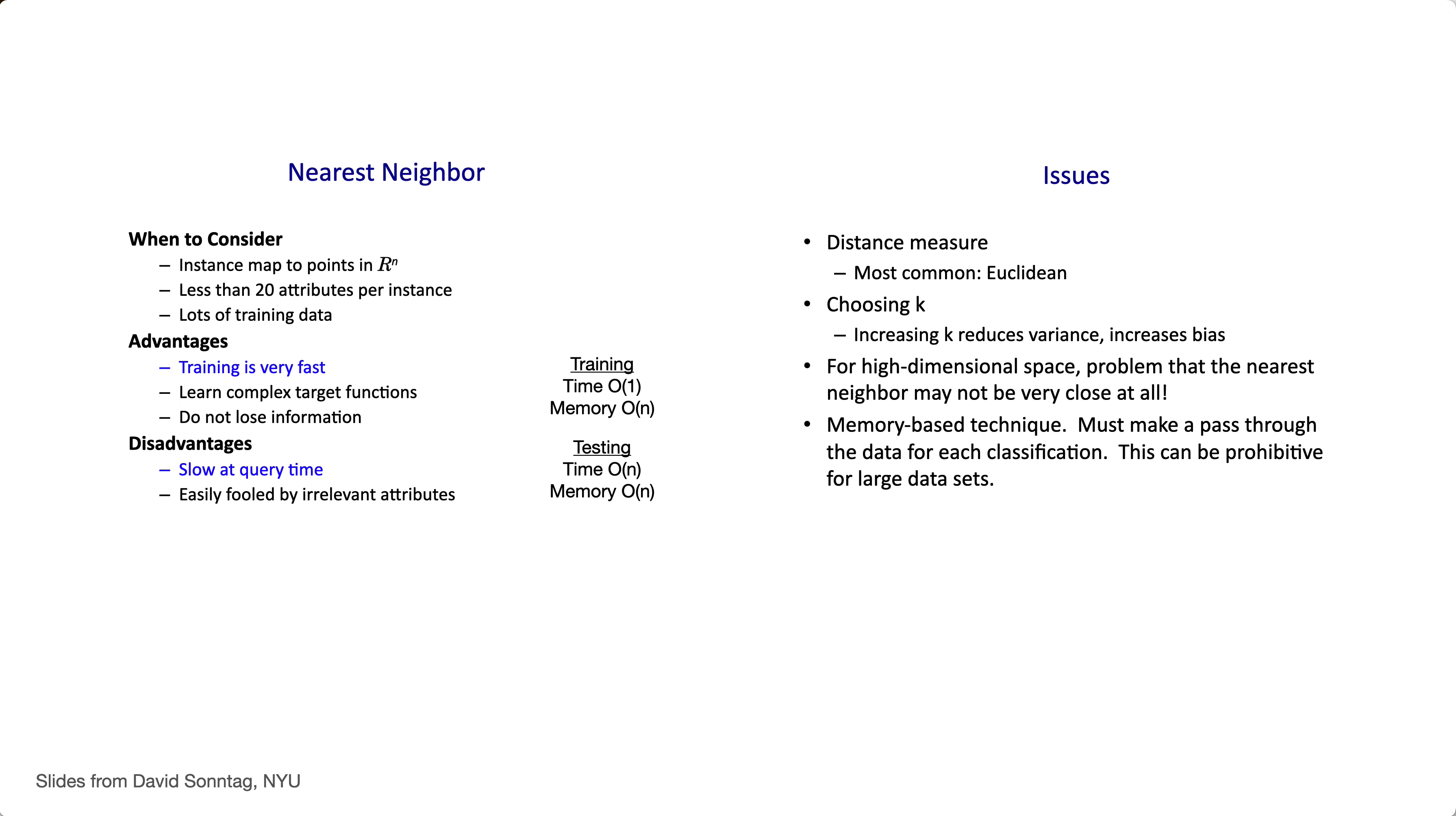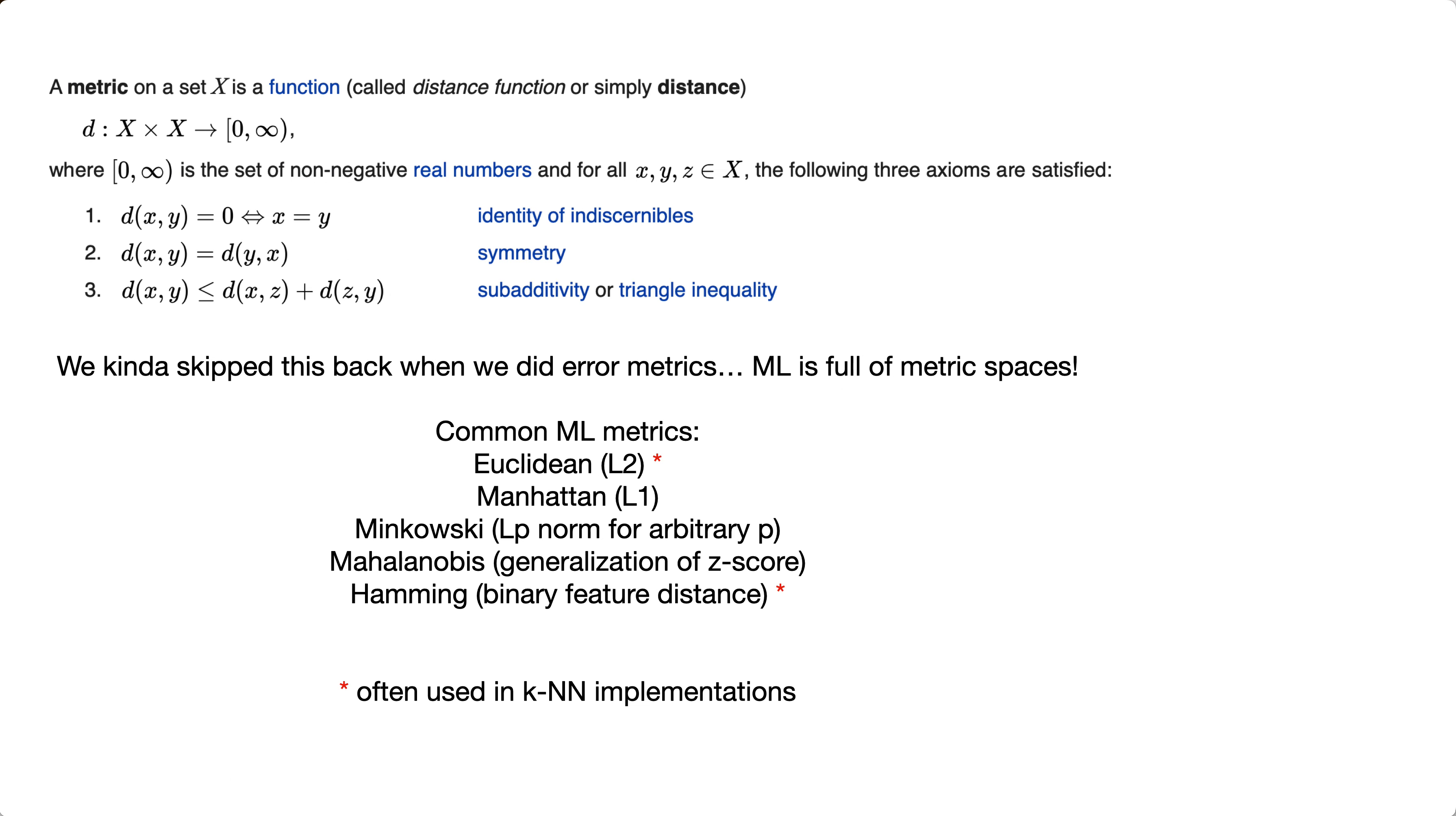So, training time fast, constant in time, testing time slow because at query time, we've got to check with every single data point potentially and see which data point is closest. That's why it's order n. Got to look at every single data point in the training set, see which one is closest.